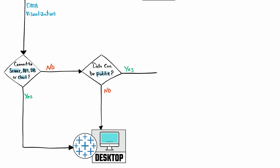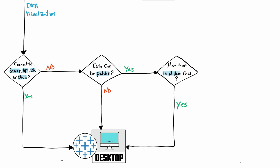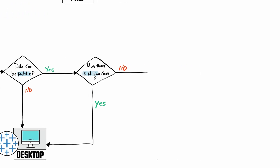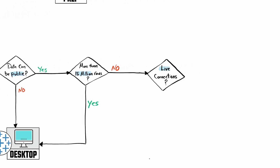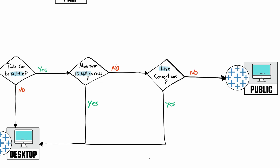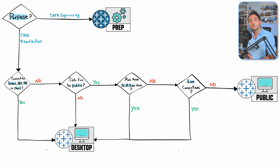But if the answer is yes — our data can be public — we jump to the next question: do our data sources contain more than 15 million rows? If yes, we have to choose Tableau Desktop. If no, we jump to the last question: do we need live connections to our data sources? If yes, we choose Tableau Desktop, but if no, then we can use Tableau Public.